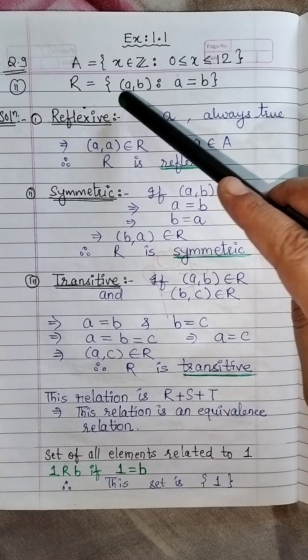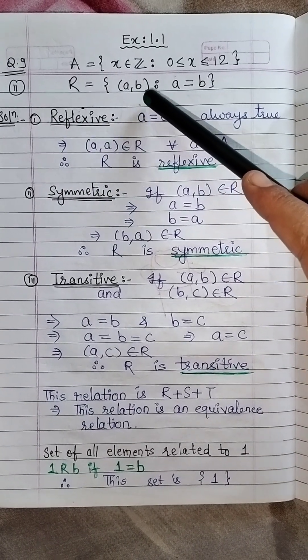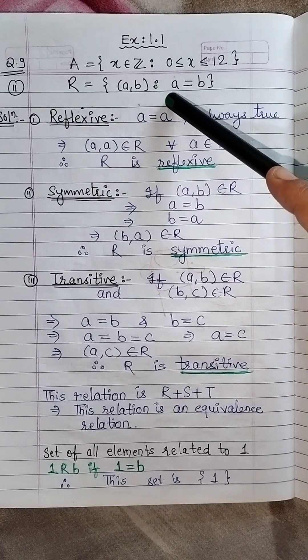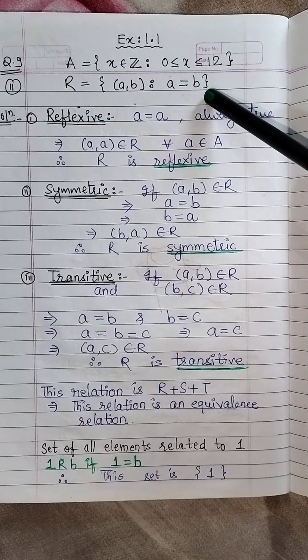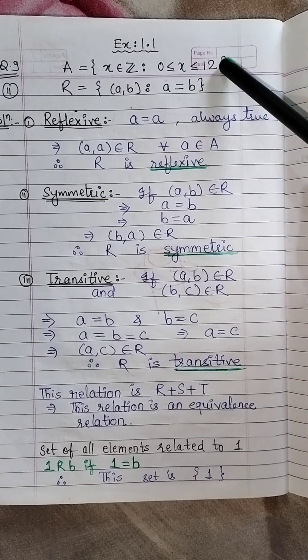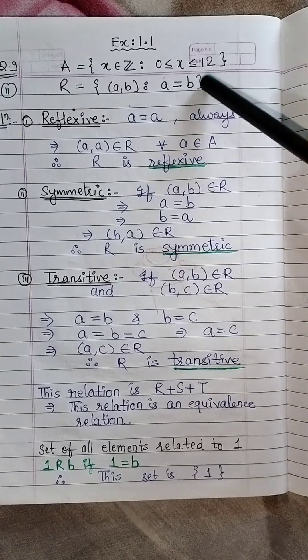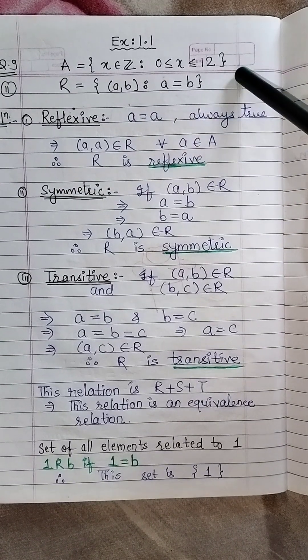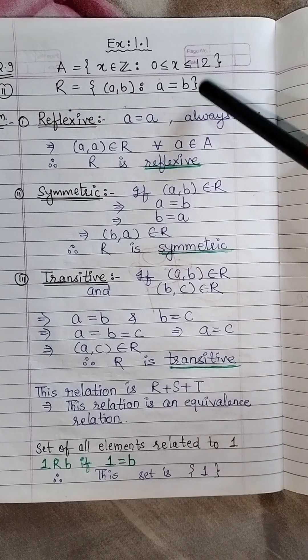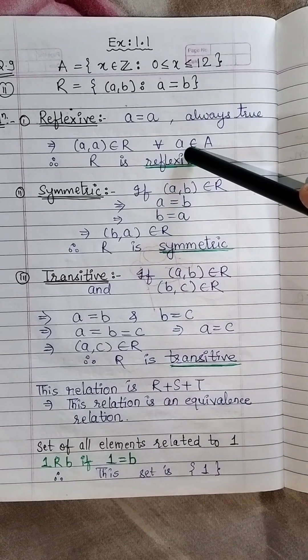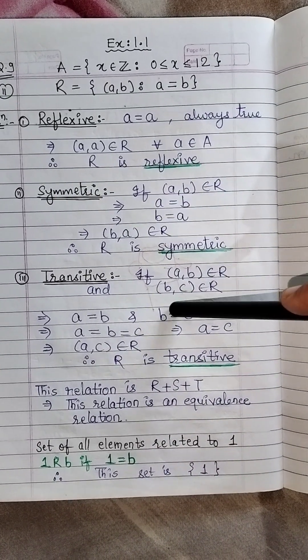Now this is relation R which is defined as the pair AB belongs to the relation if you have A is equal to B and it is defined on a set A which is X belongs to Z such that 0 is less than equal to X is less than equal to 12. You have to show that this is an equivalence relation. So you have to show that it is reflexive, symmetric as well as transitive.